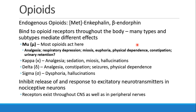There are many different subtypes of opioid receptors. The most common is the mu subtype, where most opioids act. This is responsible for analgesia, respiratory depression, miosis (pinpoint pupils), euphoria, some physical dependence, as well as side effects like constipation and urinary retention. There are also kappa, delta, and sigma receptors, which are responsible for other components of analgesia, sedation, and side effects.